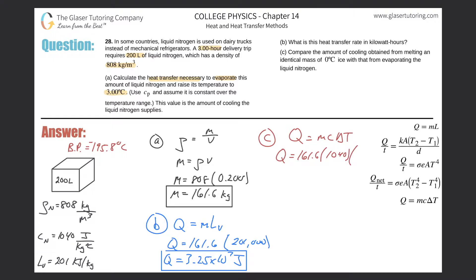The final temperature is 3°C and the initial temperature is −195.8°C, so ΔT = 3 − (−195.8) = 198.8°C. Calculating: 161.6 × 1040 × 198.8, we get approximately 3.34 × 10⁷ joules for the sensible heating portion.